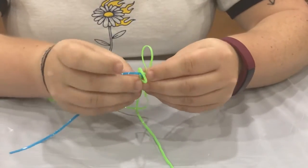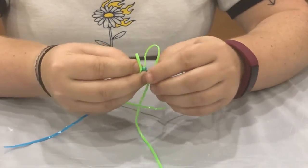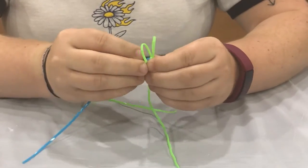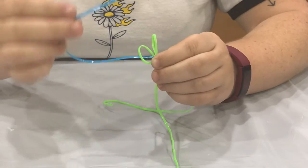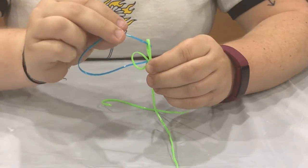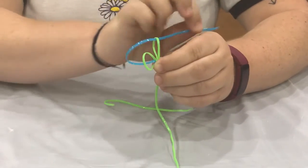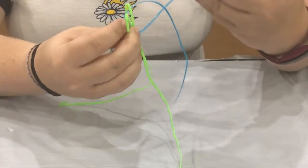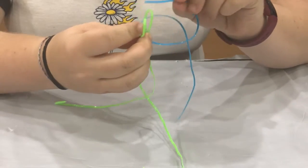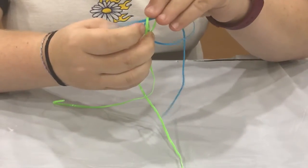The smaller the loop it is, the easier it is when you're trying to tighten it. Then you take your blue on the right side and make it go over the green and then under, or through. And then the same with the other side. And you just keep doing this until you're almost out of string.